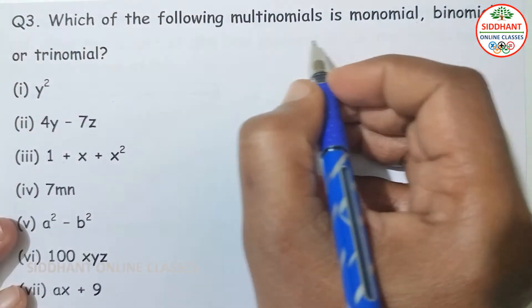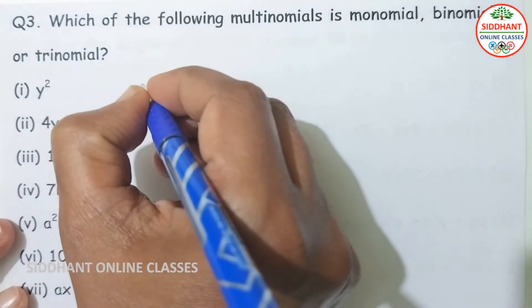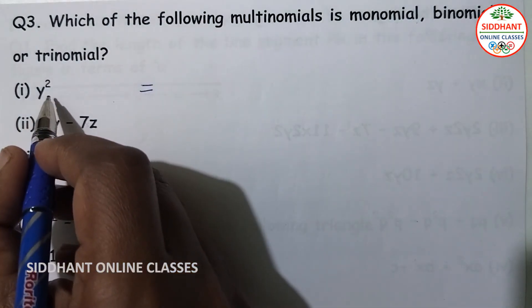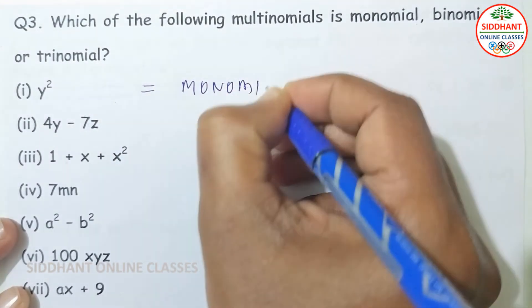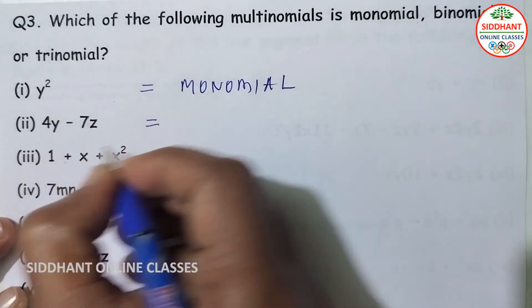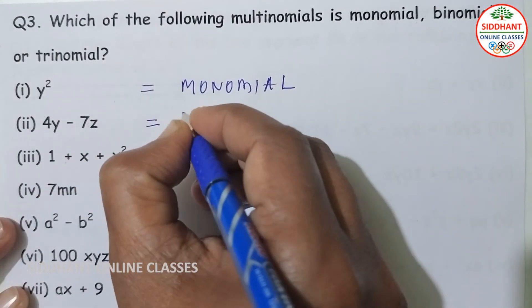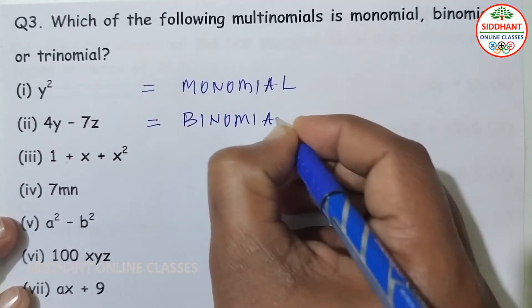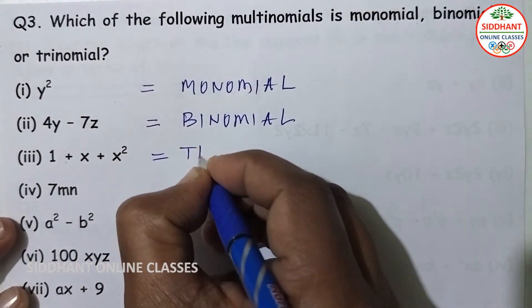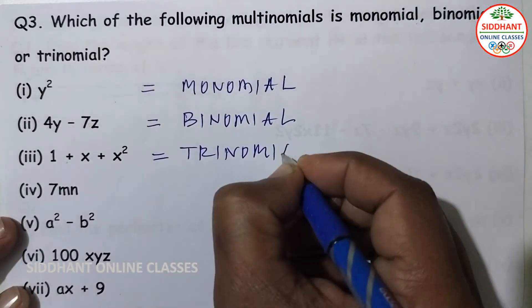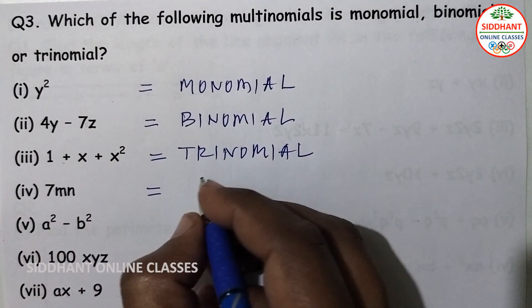Question number 3: which of the following is monomial, binomial, or trinomial? First — y square — only one term, so it is a monomial. Second — 4y minus 7z — two terms, so it is a binomial. Third — 1 plus x plus x square — three terms, so it is a trinomial.